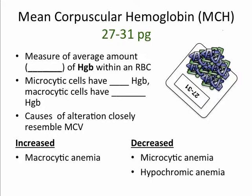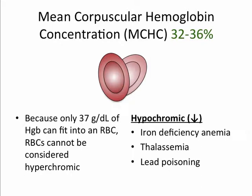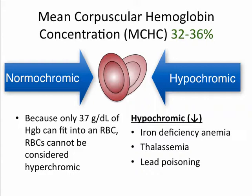The mean corpuscular hemoglobin, or MCH, is a measurement of the average amount or weight of hemoglobin within a red blood cell. Microcytic cells have less hemoglobin, whereas macrocytic cells have more hemoglobin. The causes of alterations in MCH closely resemble the mean corpuscular volume. You'll find an increase in MCH in macrocytic anemia and a decrease in microcytic anemia, as well as hypochromic anemia. The mean corpuscular hemoglobin concentration, or MCHC, is a measurement of the average concentration or percentage of hemoglobin within a single red blood cell. Red blood cells are either considered normochromic or hypochromic, and because only 37 grams per deciliter of hemoglobin can fit in a red blood cell, they cannot be considered hyperchromic. Cells are considered hypochromic with a decreased MCHC in iron deficiency anemia, thalassemia, and lead poisoning.